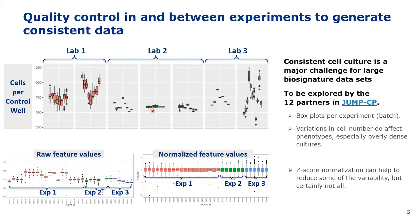Another challenge we need to assess at screening scale and over a considerable period of time is maintaining consistency in cell number. Variability in cell morphology with varying culture density and increasing passage number adds to the complication. Three different sites running the same cell painting protocol can achieve quite different results. Some tools like feature normalization can take away some of this variability, but definitely not all. One interesting consortium I want to mention is the JUMP CP consortium that Janssen takes part in together with 11 other partners and the Broad Institute — they still need to tackle this challenge among many others.